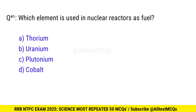Question 41. Which element is used in a nuclear reactor as fuel? Right option is B, uranium.